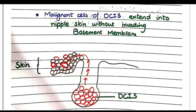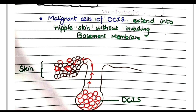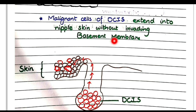Looking at this diagram, ductal carcinoma in situ arises from the terminal ducts and lobules. The red colored cells represent ductal carcinoma in situ. In Paget's disease of nipple, these malignant cells extend from the lobule and terminal duct, crossing the lumen of the ducts into the skin of the nipple, getting incorporated into the nipple skin.